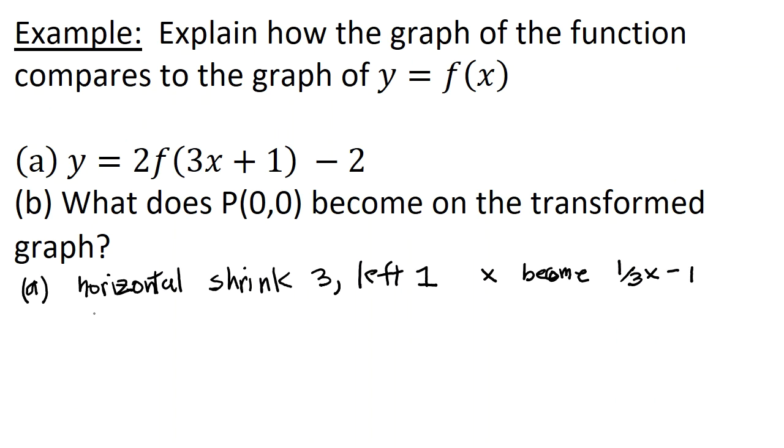Now, for outside the argument of the function, we have a vertical stretch. So a vertical stretch by 2. That's going to impact the y-coordinate. And then minus 2 means it's down 2. So the y-coordinate then will become 2y. It doesn't matter what you feed into f of x. That's just all y minus 2.